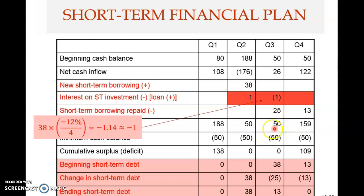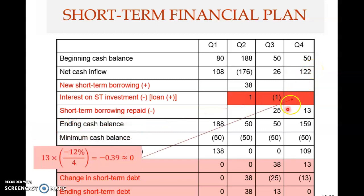After repaying 25 million of the 38 million borrowed, there is still 13 million in outstanding short-term debt going into quarter four. Quarter four begins with a 50 million cash balance and has a net cash inflow of 122 million. The interest cost on the remaining 13 million loan is calculated by multiplying 13 million by 2.25% - the quarterly rate.